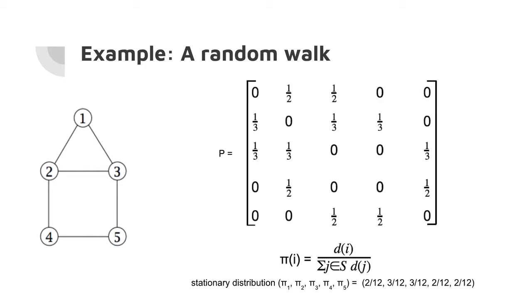Our stationary distribution for state 1, or pi sub 1, is the number of degrees of the state, which is 2, over 2 times the total number of links in the system, which is 12. That's how we calculated the stationary distribution of our random walk.